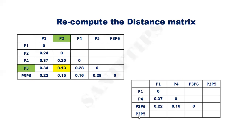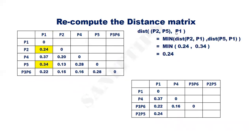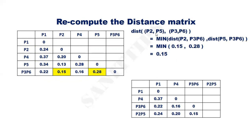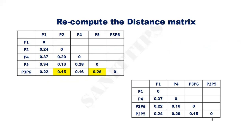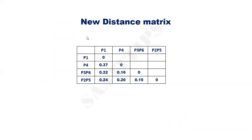Compute the distance between {P2, P5} and P1: it is 0.24. Distance between {P2, P5} and P4 is 0.20. Distance between {P2, P5} and {P3, P6} is 0.15, and the last entry is 0. This is the updated distance matrix.